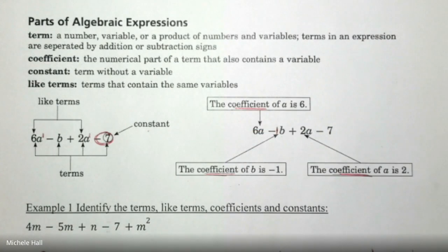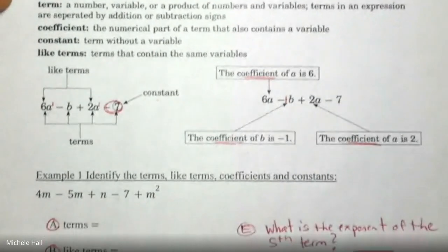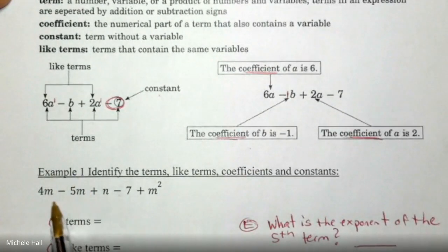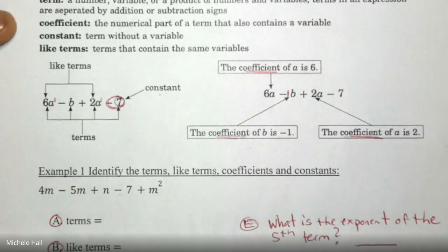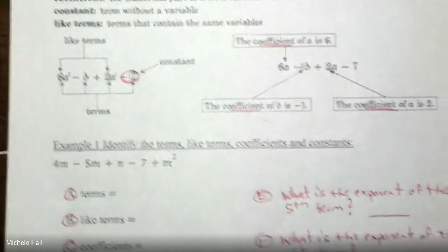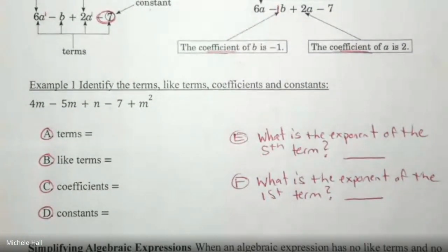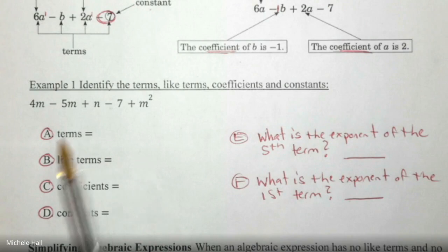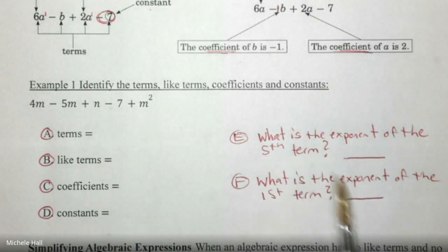Now you're going to answer some questions. Example 1, just say example 1, and then write this expression down. Pause the video and write down a through f. Terms, like terms, coefficients, constants. What is the exponent of the fifth term? What is the exponent of the first term? Pause the video and then come back and we'll do this together.